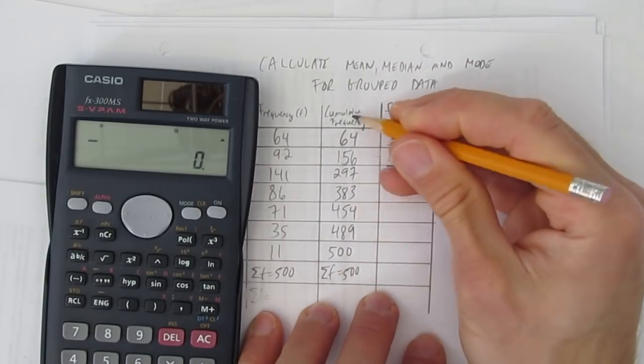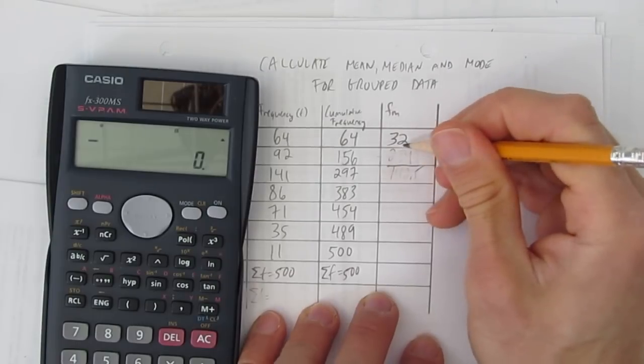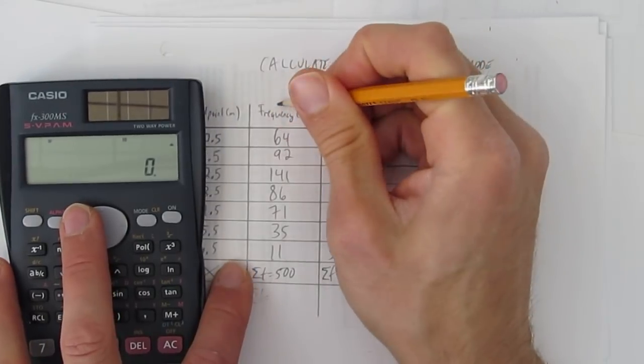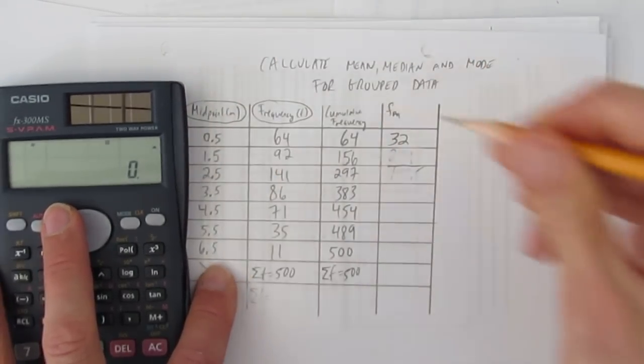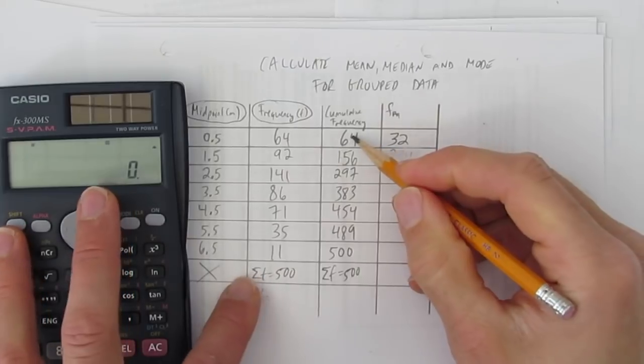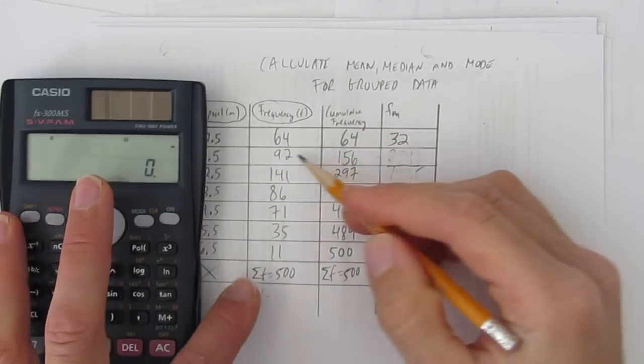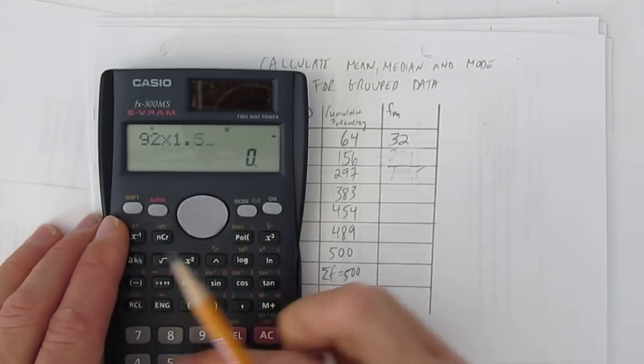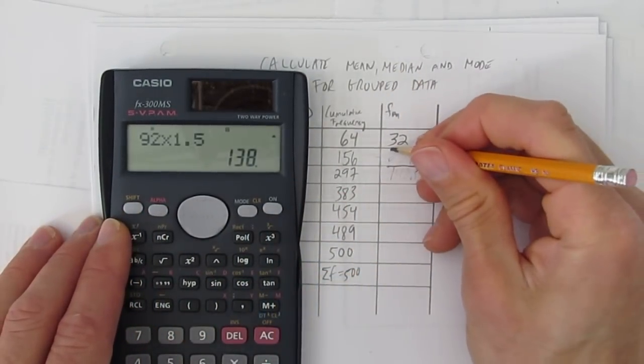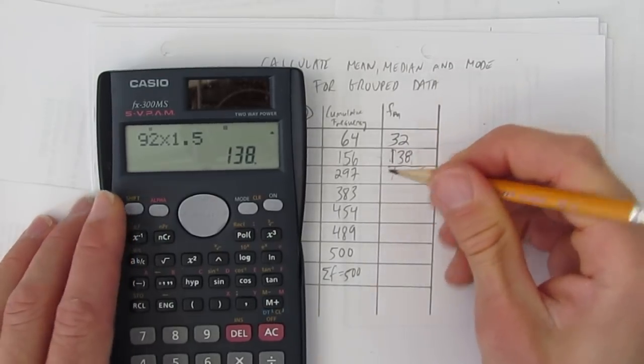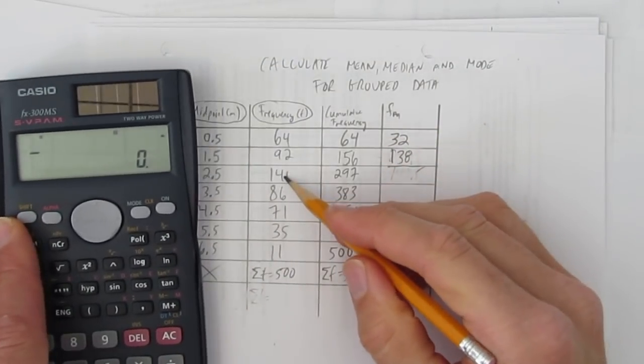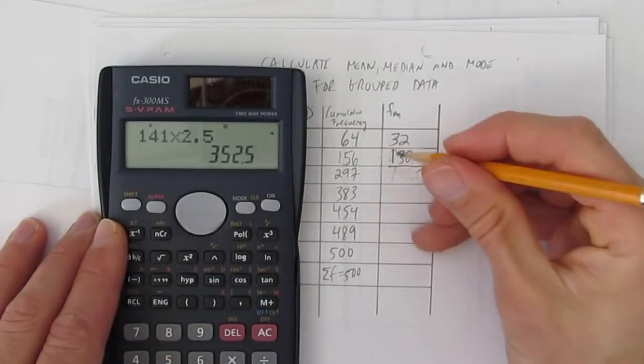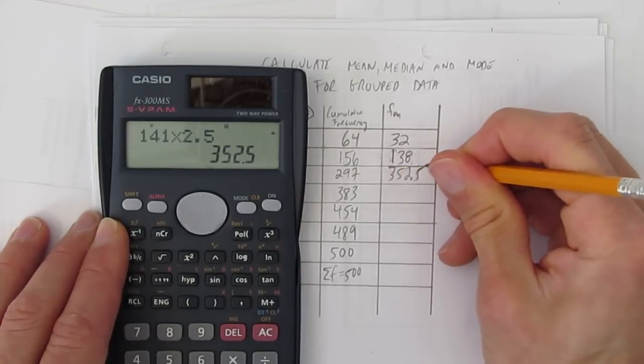I need this cumulative frequency column, but not for calculating f times m. Maybe it would be helpful if I circled the columns I'm multiplying. I'm supposed to multiply this times this. So 64 times 0.5, that was 32. Not this column. I have 92 of these things. What's 92 times 1.5? 138. Alright, now we're on the right track. What's 141 times 2.5? 352.5. Alright.